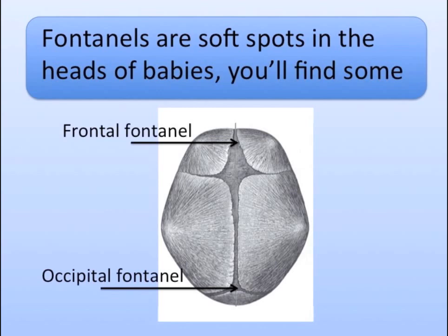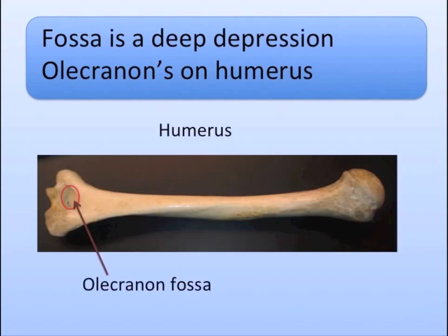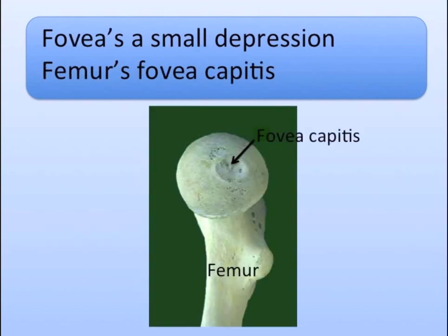Fontanelles are soft spots in the heads of babies, you'll find some. Foramen is an opening — the occipital has the magnum. Fossa is a deep depression — olecranon fossa on the humerus. Fovea is a small depression — the femur's fovea capitis.